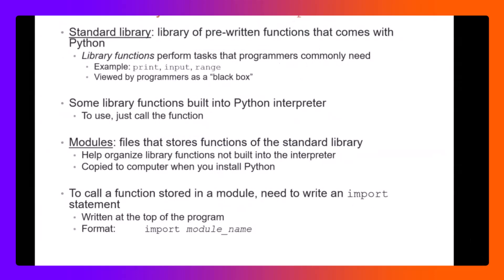The standard library contains functions that have already been written for you. In Python, you are using functions someone has written, like input, print, and range — these are actually functions. All of them are available in a library. In software, a library is a collection of functions, and this one is called the standard library.